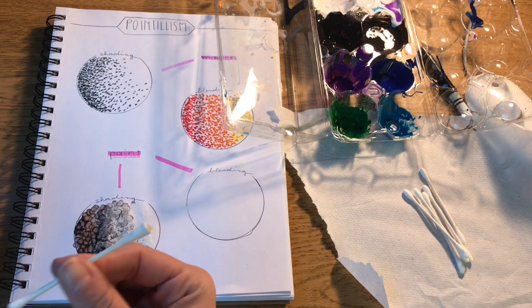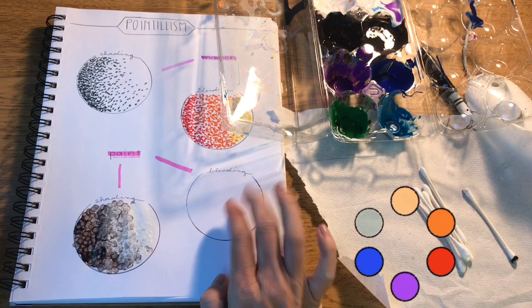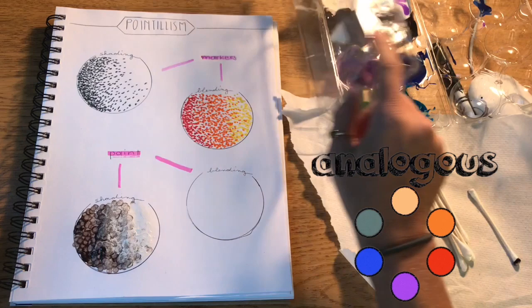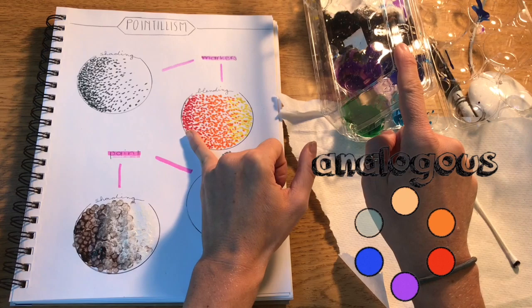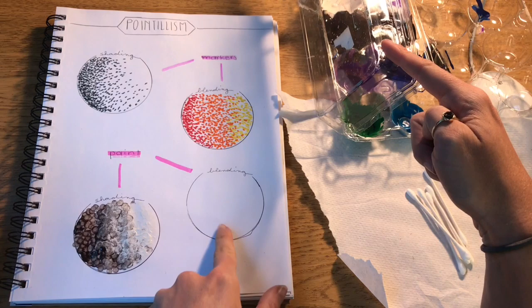And then to blend I'm going to use analogous colors, so that just means colors that are close together on the color wheel. So I used red, orange, and yellow with my markers. Those are analogous - red is next to orange and orange is next to yellow. So I think maybe I'll do the cool colors for my paint. So I'm gonna start off with purple.